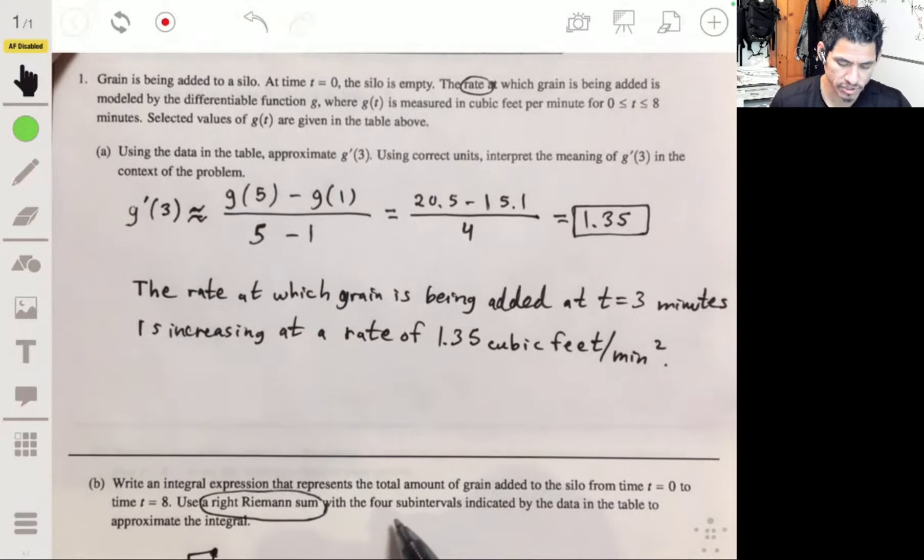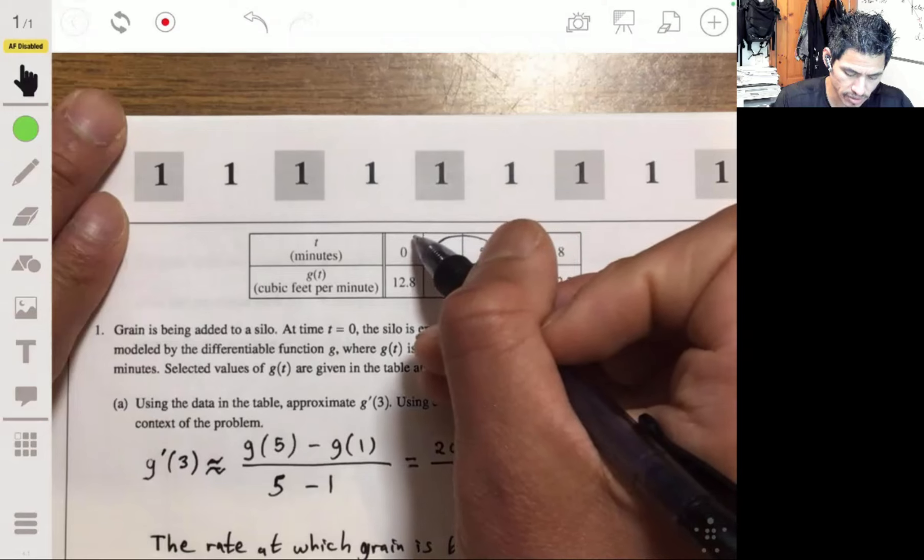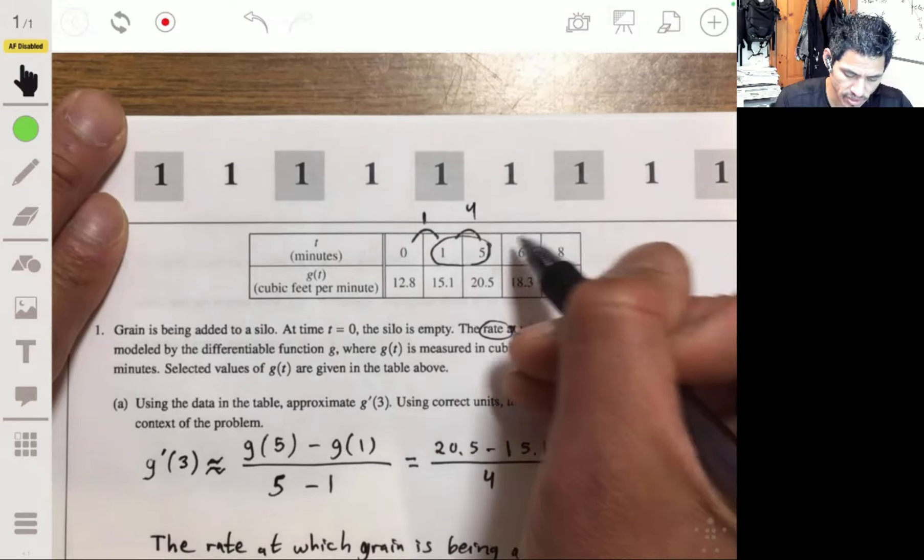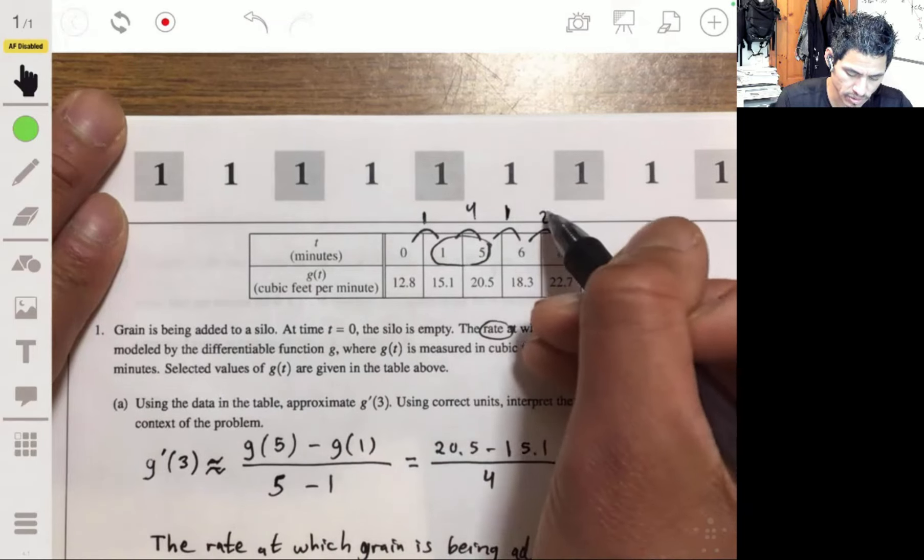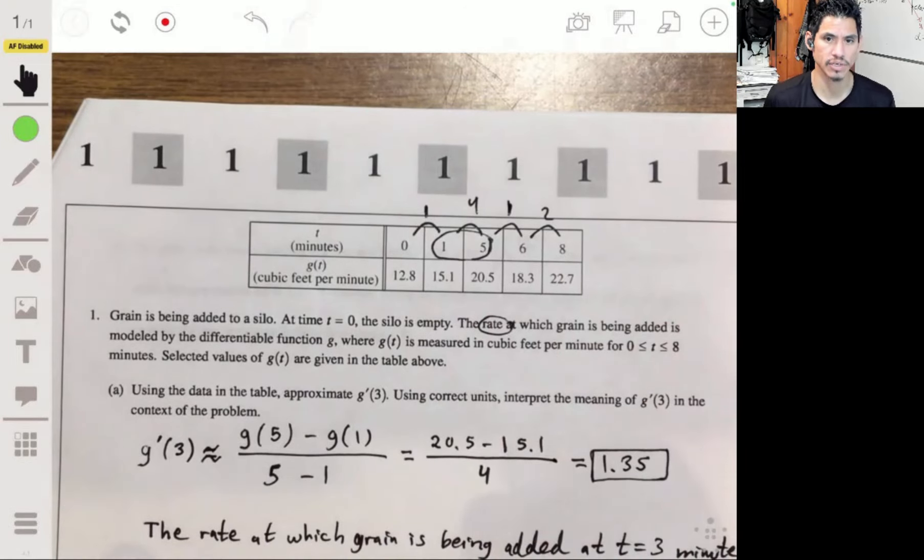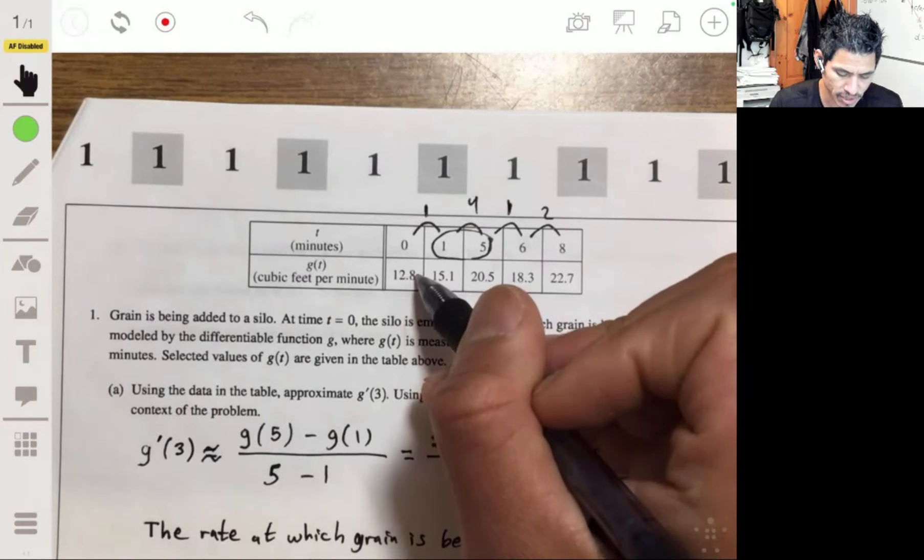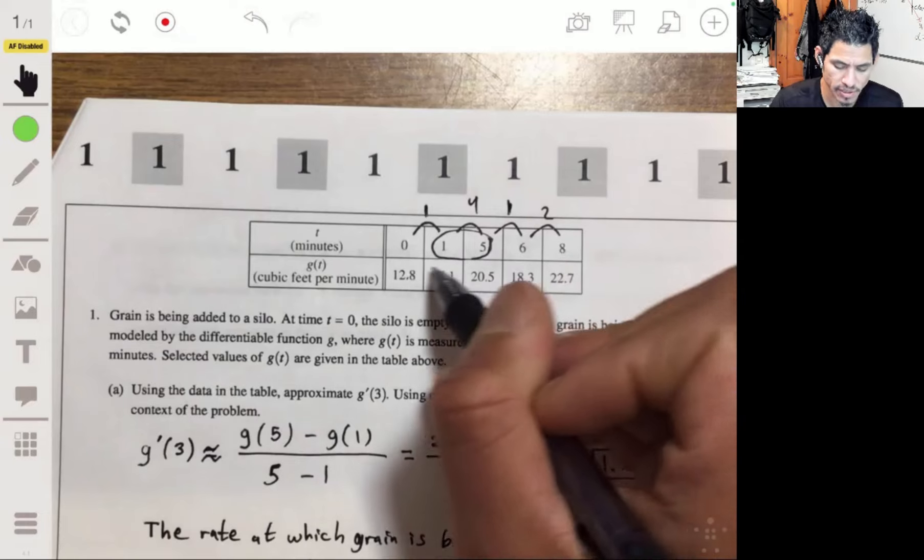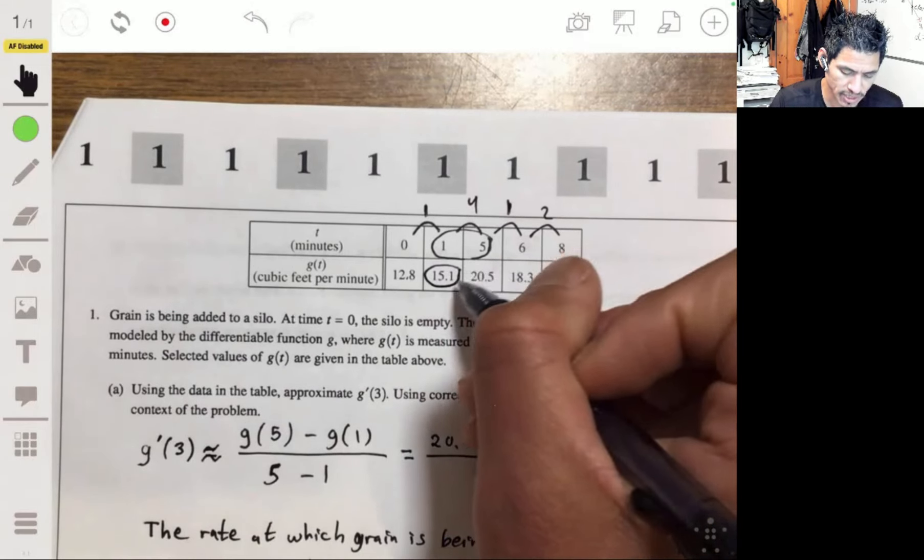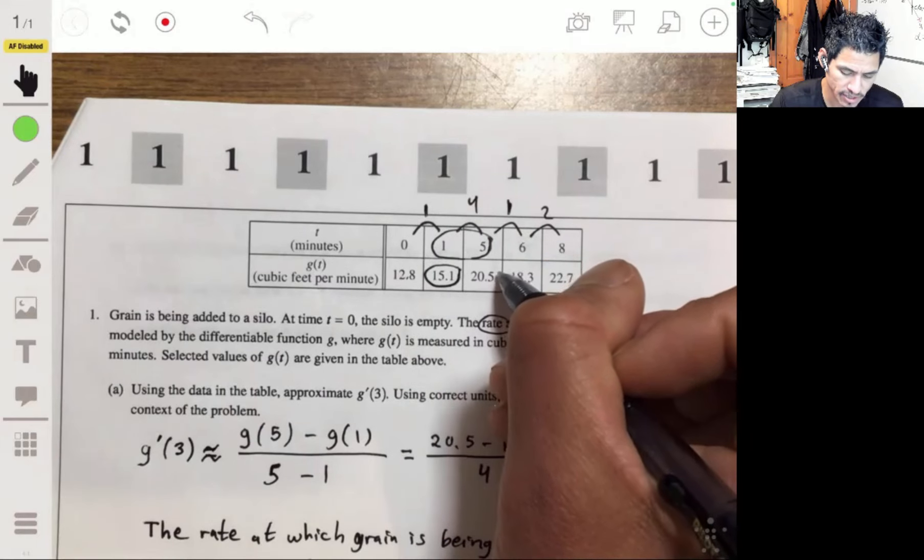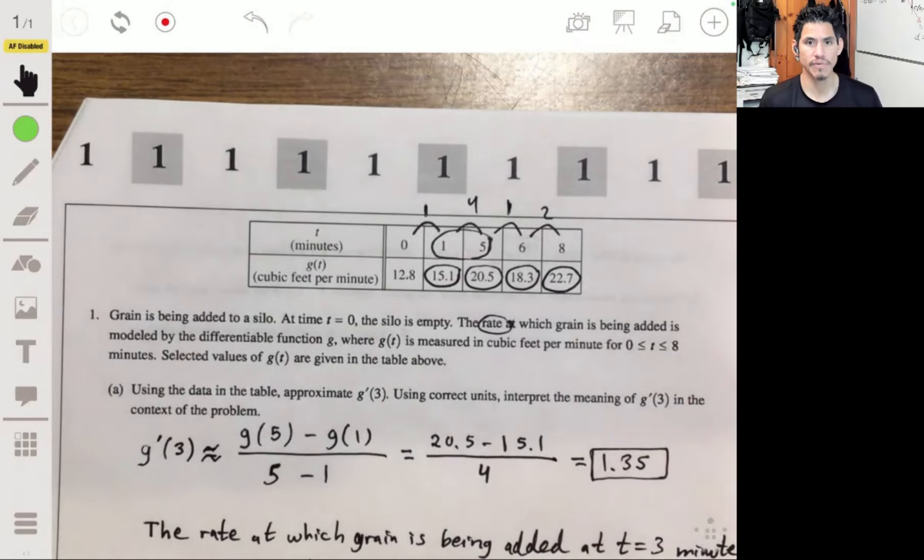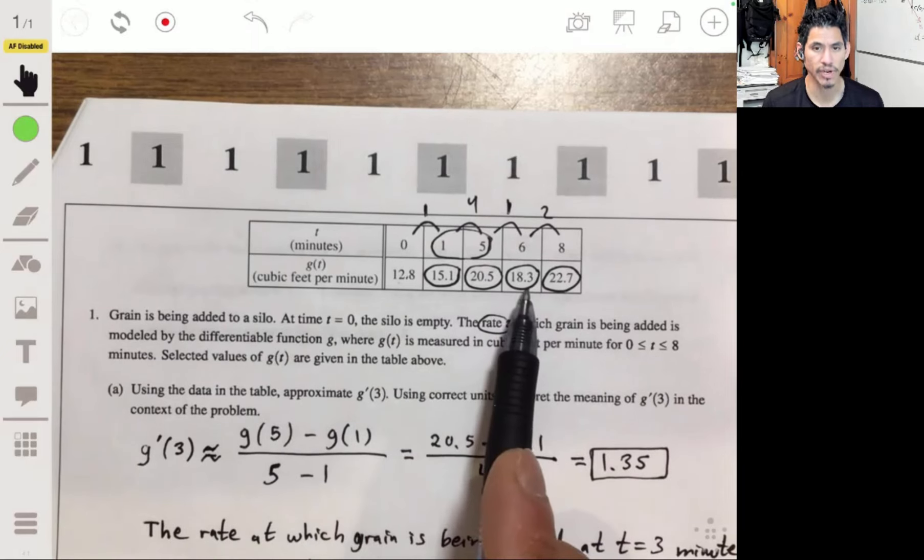So we're having four subintervals. The subintervals are the lengths from zero to one, which is one, from one to five is four, five to six is one, and six to eight is two. So then these are essentially the widths of the rectangles, the heights are these values. Now, since this is right, we know to use the one on the right of the first of each rectangle. So for the first rectangle, it would be 15.1, the second one would be 20.5, the 18.3 and the 22.7. If it said left, we would use the 12.8 up to the 18.3.